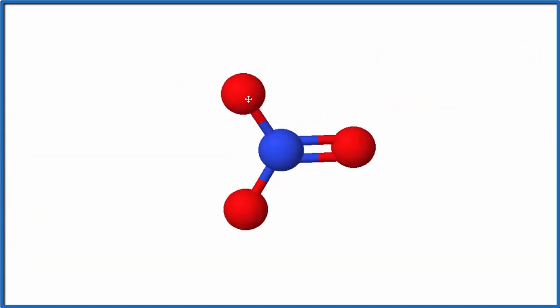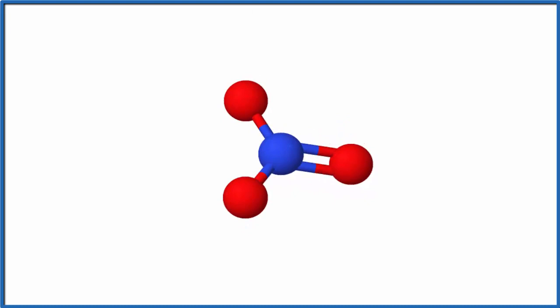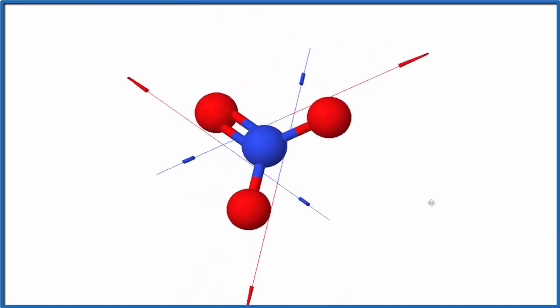So here's our nitrate ion, one of the resonance structures. We have our double bond here. If we look at the dipoles on the bonds, we can see they all point in different directions.